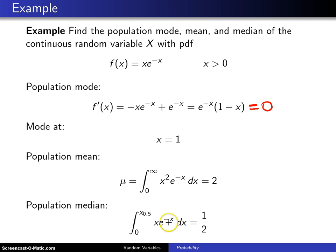Again, I won't put you through the integration by parts on this integrand, but when you work this out by hand, x₀.₅, the population median, turns out to be approximately 1.6783.